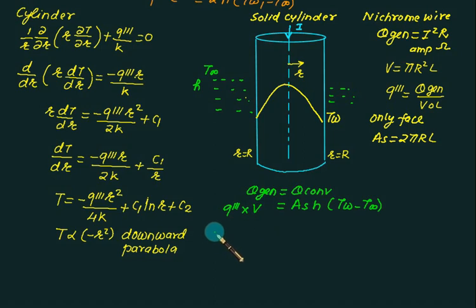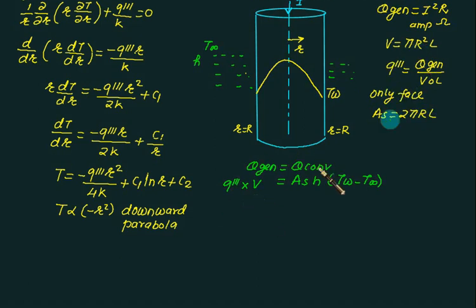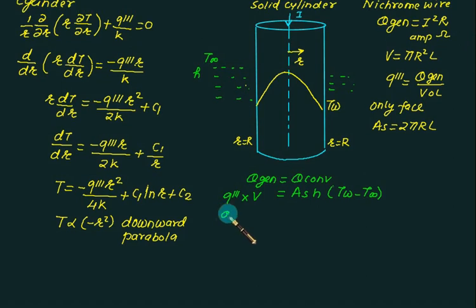And if you want to find out the temperature at center line that is the maximum temperature, then use our differential part. So if we substitute here volume and surface area, you will get q triple dash into pi r square into L equals surface area 2 pi rL into h into tw minus T infinity. Your pi will get cancelled, L will cancel.